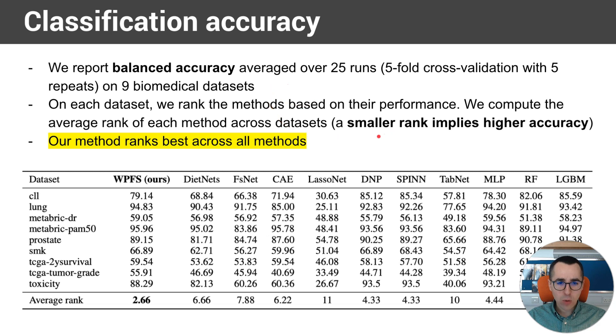Now, we compute the average rank of each method. So, for every dataset, we rank the methods, where rank 1 means it's the best method on that dataset. And then for each method, we average those ranks. So, we see that our method performs best, because a smaller rank means that the method has higher accuracy. Notice that our method outperforms standard methods, like a random forest, or a gradient boosting tree, or even an MLP, as well as modern methods, such as TabNet or a concrete autoencoder.